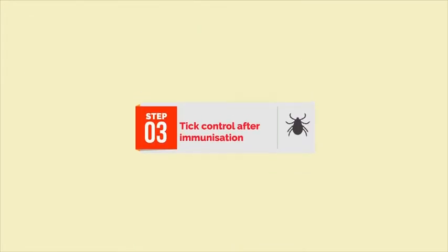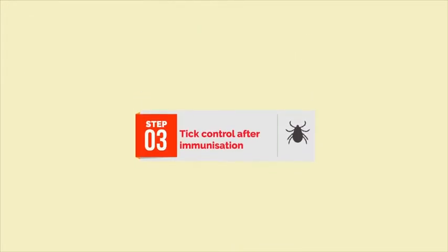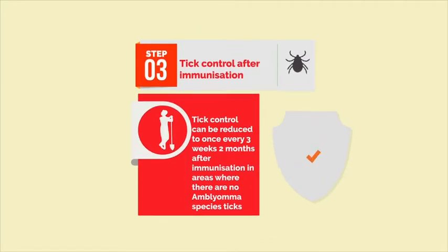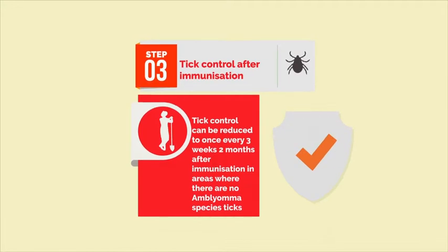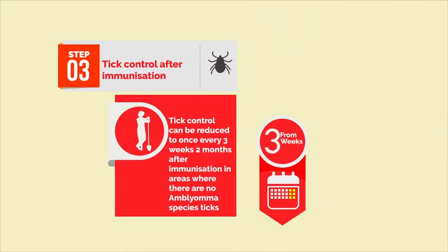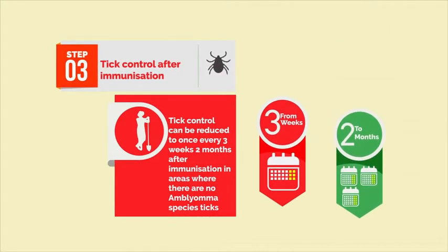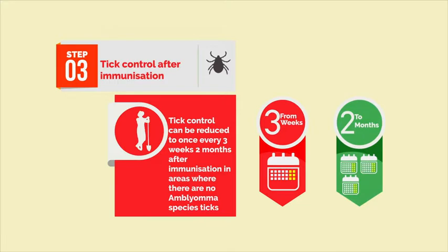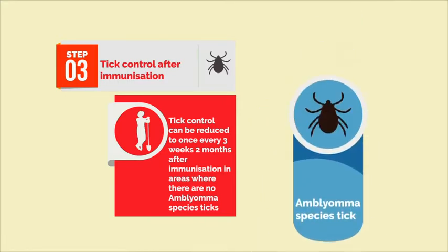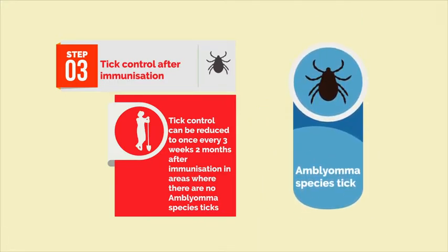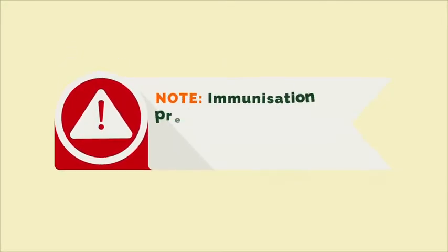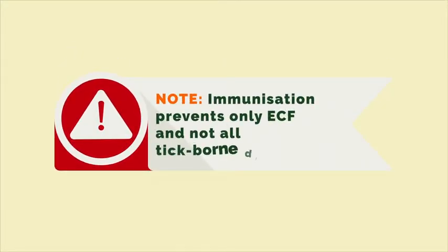Step 3: Tick control after immunization. Tick control can be reduced to once every three weeks, two months after immunization, in areas where there are no Amblyomma species of tick. Immunization prevents only ECF and not all tick-borne diseases.